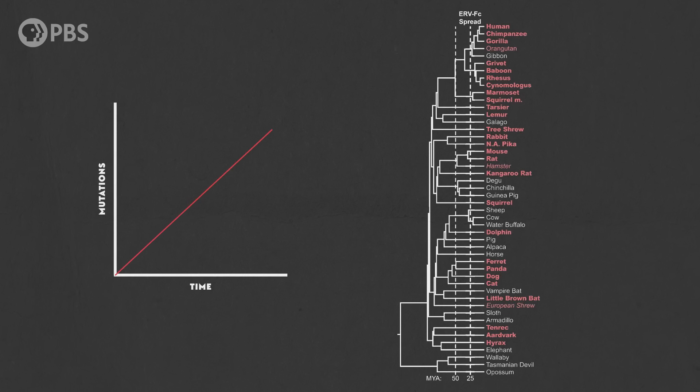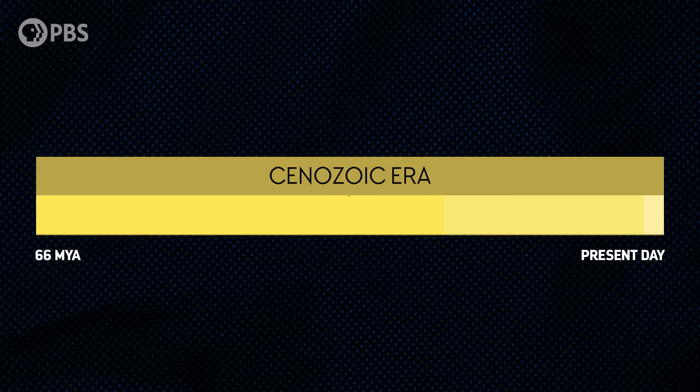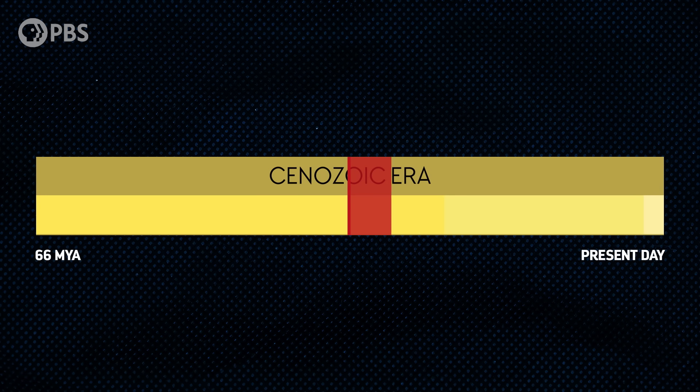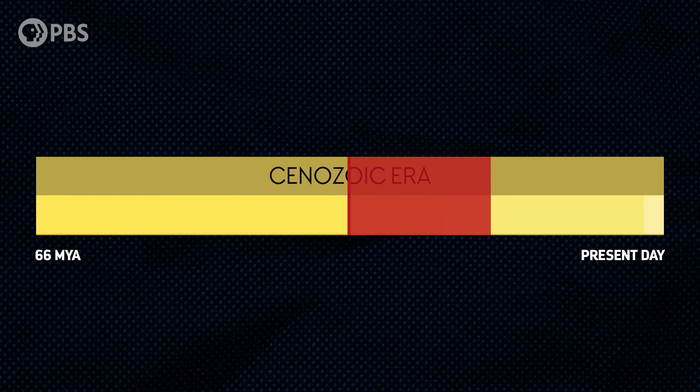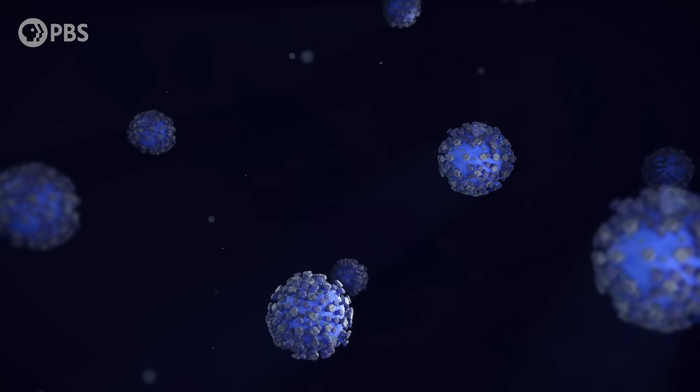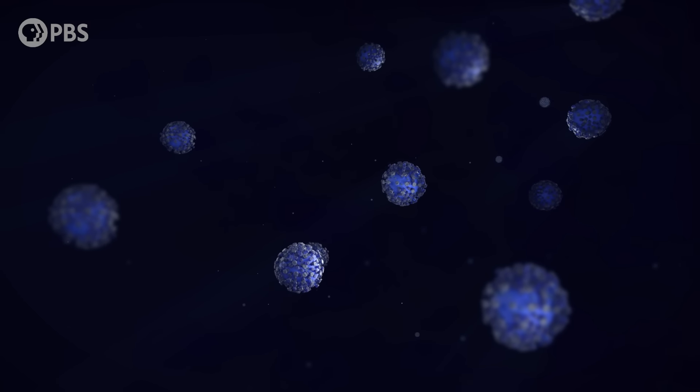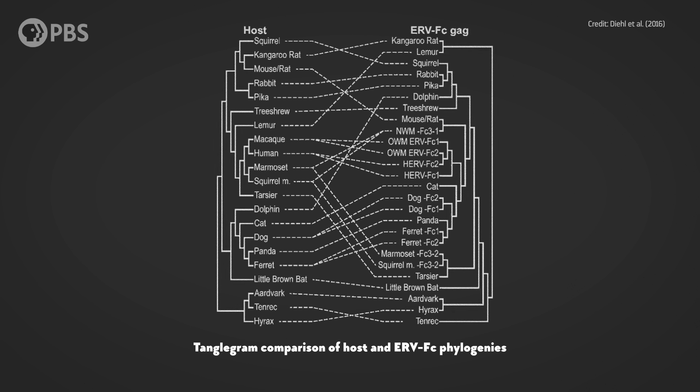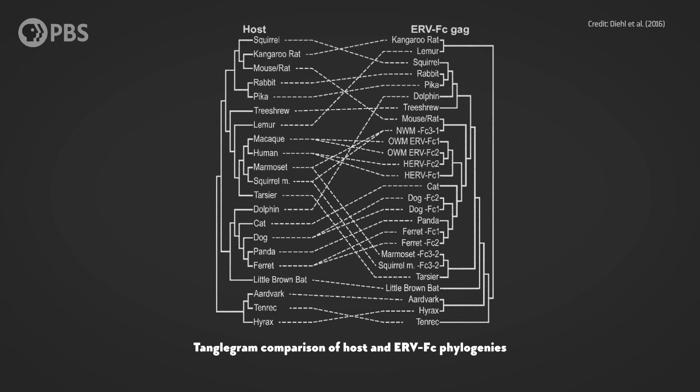But by using that method known as the molecular clock, and by building a family tree of the virus strains across mammal species, researchers think that the virus originated around 33 million years ago. And from there, it spread around the world for at least 15 million years. While we don't know what species the virus infected first, we can tell that it started jumping from group to group pretty quickly. There's evidence of at least 26 independent transmissions between species.